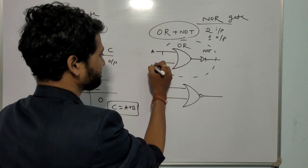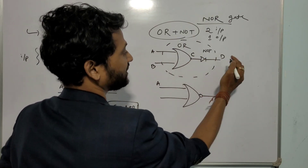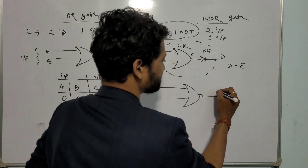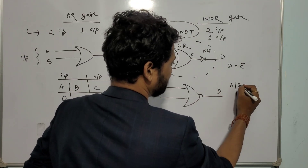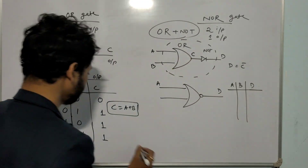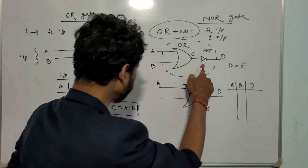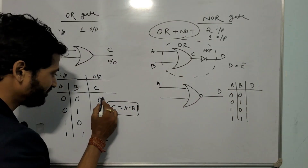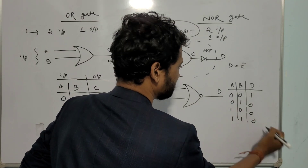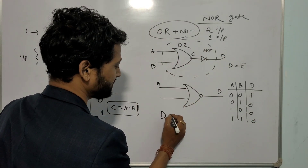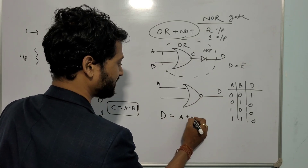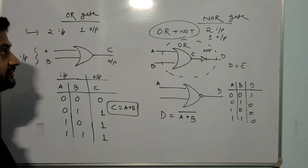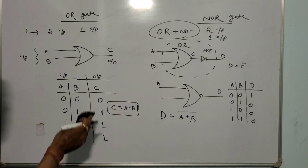For the NOR gate truth table, let A and B be inputs, C be the OR output, and D be the final NOR output. The OR output C gives: 0, 1, 1, 1 for input combinations 0-0, 0-1, 1-0, 1-1. Since a NOT gate is connected, D is C bar, so the final output D is: 1, 0, 0, 0. Mathematically, D equals (A plus B) bar.